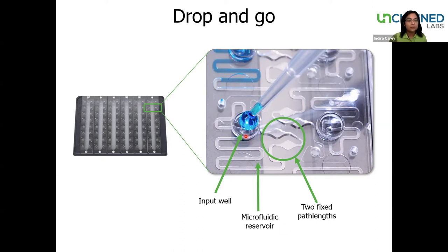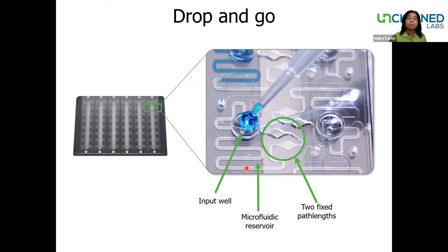The unique microfluidic circuits that are molded into Lunatic plates and chips ensure there's no cross-contamination or evaporation. Once the sample is loaded, it's pulled into the reservoir area by capillary action. When the sample hits a hydrophobic point, it stops. At this step, the sample can actually sit for up to two hours before reading with no evaporation. After the plate is loaded into the instrument, the empty microcuvettes are read — that removes any absorbance contribution from the plastic. A pump then applies a small vacuum, which moves the samples into the microcuvettes for reading.